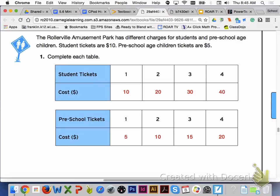The ratios for the student tickets will be 1 to $10, 2 to $20, 3 to $30, and 4 to $40. And the ratios for the preschool tickets will be 1 to $5, 2 to $10, 3 to $15, and 4 to $20.